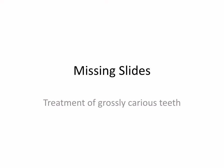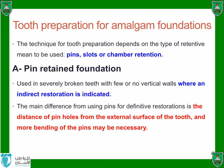These are the missing slides for the lecture on treatment of grossly carious lesions. We were speaking about amalgam foundation. Amalgam can be used as a foundation under indirect restorations. To place the amalgam, we need secondary retention. The secondary retention for a foundation is the same as for a normal amalgam restoration — we can use pins, slots, or the pulp chamber.